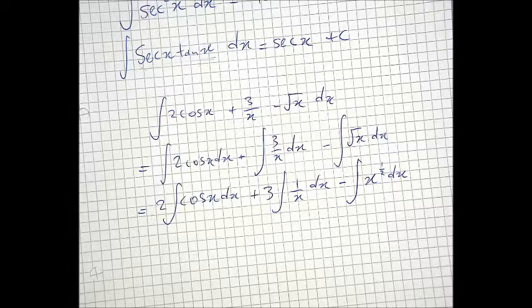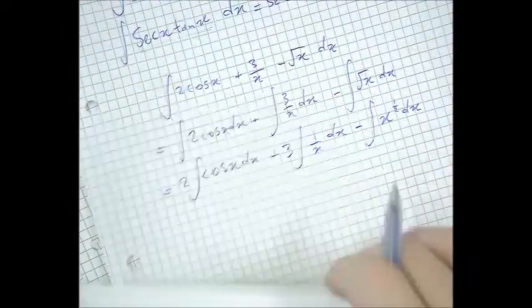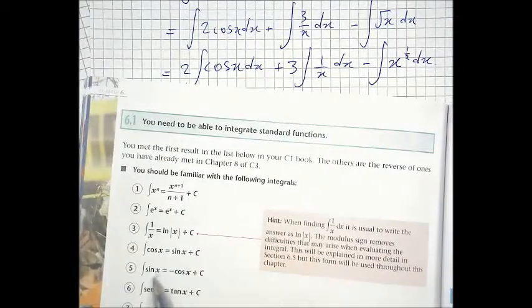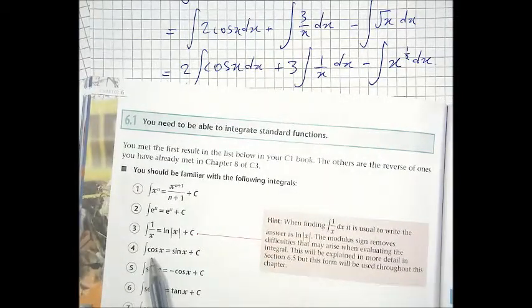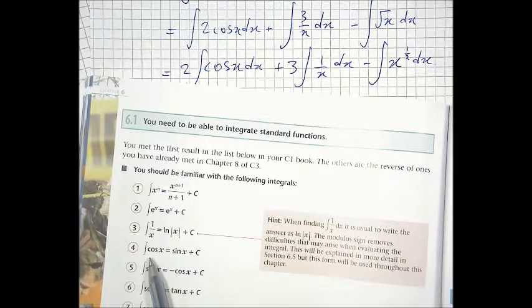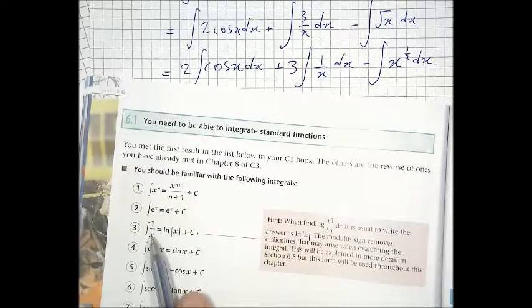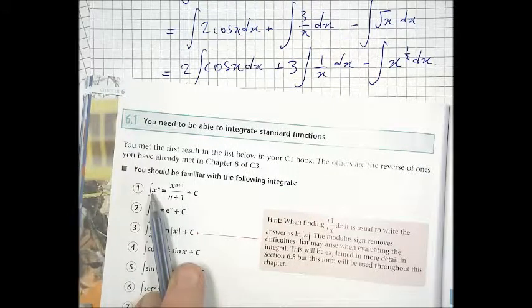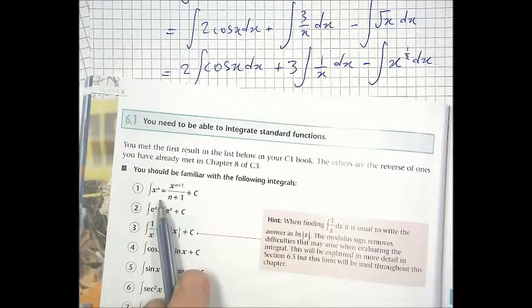Now, each and every one of those things is in the list there. What do we see first? I see an instance of the left hand side of number 4, I see an instance of the left hand side of number 3, and I see an instance of the left hand side of number 1 with the role of n being played by half.